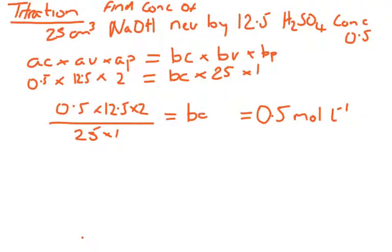In a titration, we are looking at acid concentration times by acid volume times by the power of the acid, i.e. the number of H plus ions present, will equal the base concentration times by the base volume times by the base power, i.e. the number of OH minus ions that are present.